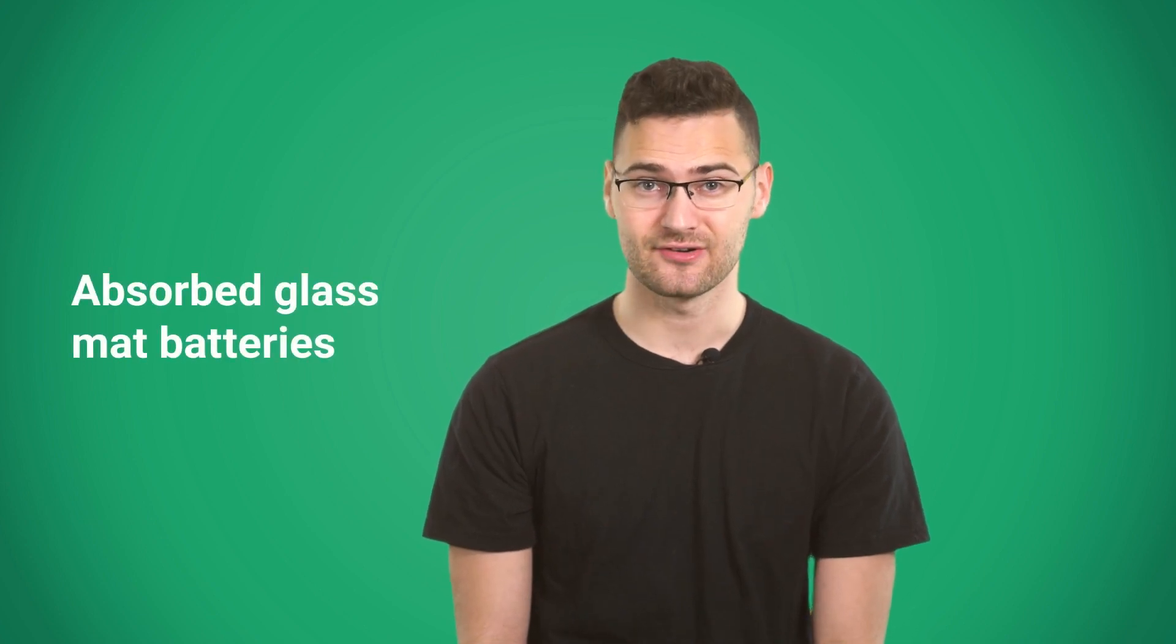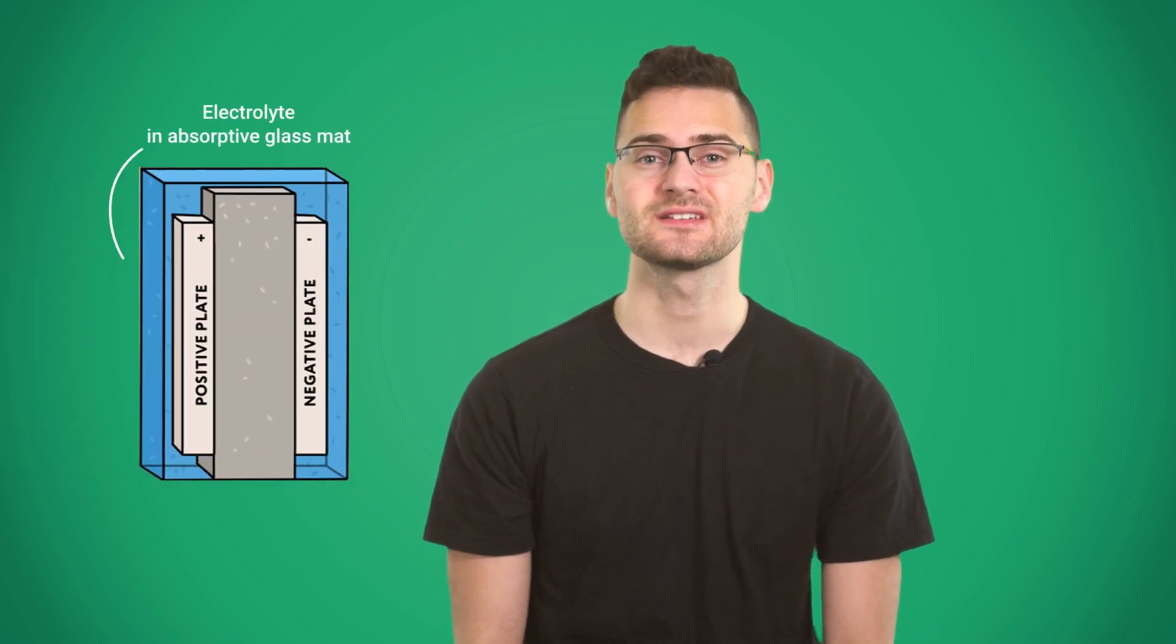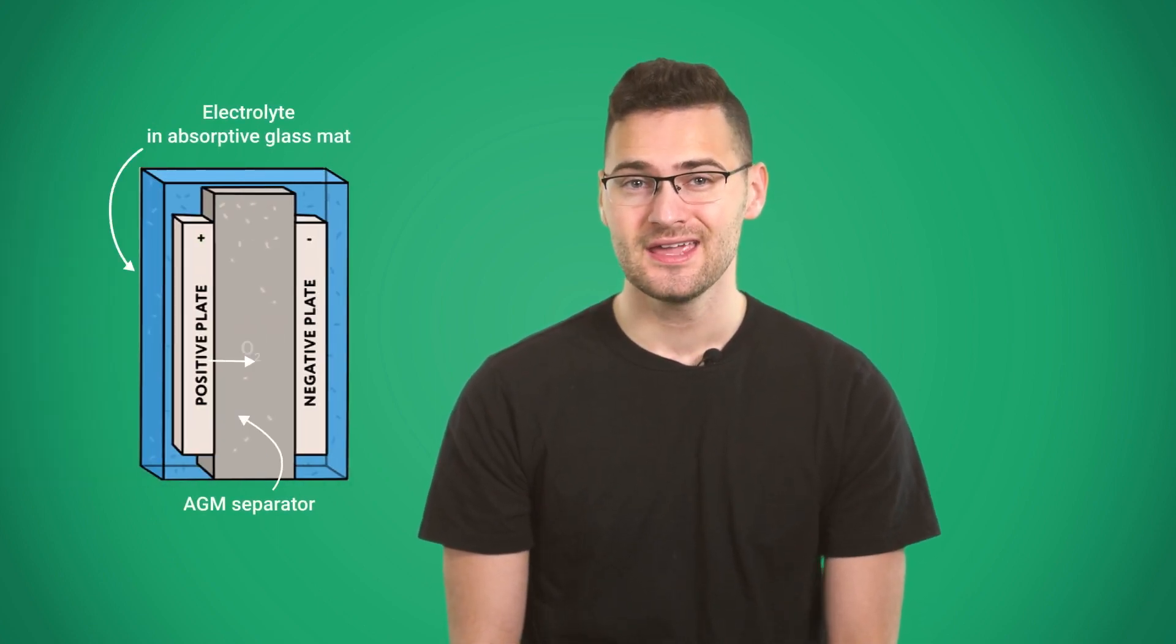The third subtype are AGM, or absorbed glass mat batteries. They're also known as dry cell, because there's no liquid water in them, which makes them safe. It isn't as affected by extreme temperatures as a flooded battery. Its DoD is around 80 percent. Their disadvantage is, again, their vulnerability to overcharging, plus AGM batteries tend to cost twice as much as a good wet cell battery.